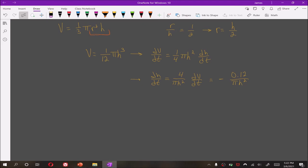Which is negative 0.12/(π h²) because dV/dt was negative 0.03. Now just plug in h equals half a foot. And we get negative 0.48/π feet per second.